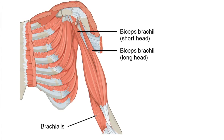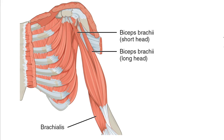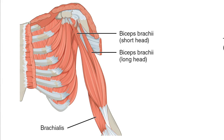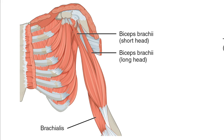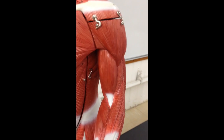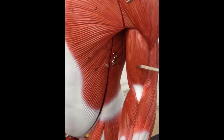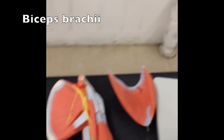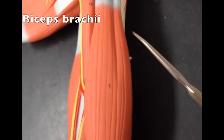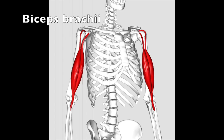Shown here are two such flexors: the biceps brachii and the brachialis. The biceps brachii is a fleshy muscle that lies on the anterior surface of the humerus. It has origins on the coracoid process of the scapula and the tubercle above the glenoid cavity of the scapula. It has a single insertion on the radial tuberosity of the radius.